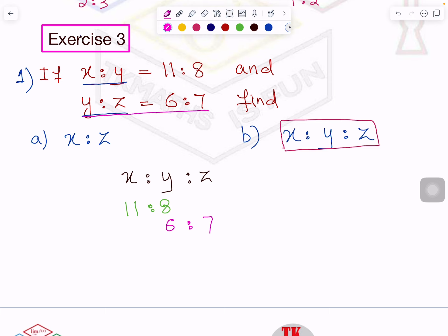Now after that, if I see y is to z is given, which is 6 is to 7. So I have written x is to y and y is to z. Now if y is common and I have to answer this question, then y has to be same. Right now y is not same. y is 8 and 6. How can I make it same?